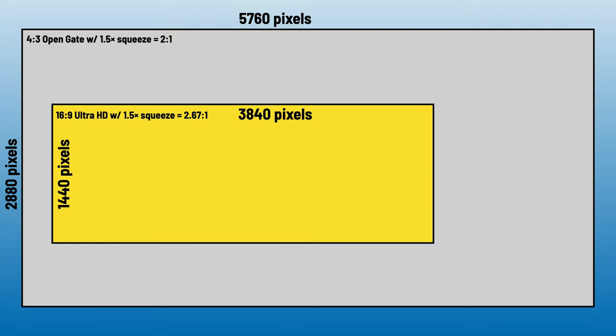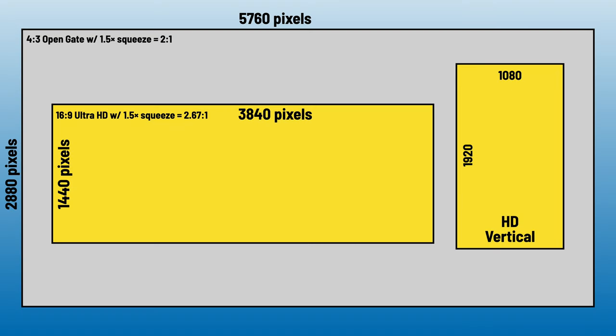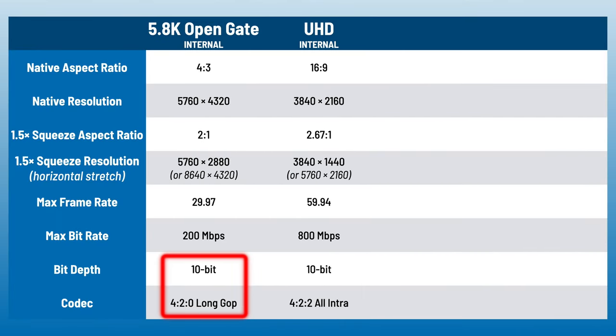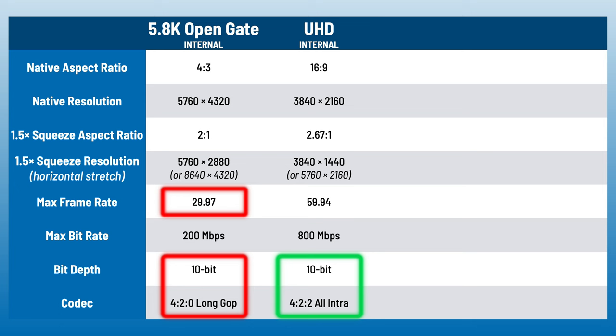Comparing squeezed 4:3 OpenGate to squeezed 16:9, OpenGate has a clear advantage as you have a lot more pixels to work with, can reframe all day long, and can even cut a vertical crop out of the footage at a full 1080x1920 resolution. But there must be a trade-off, right? Well, there is. OpenGate 4:3 internal recording is 10-bit 4:2:0 LongGOP up to 30p, while 16:9 Ultra HD is 10-bit 4:2:2 All-Intra and can go up to 60p. So you definitely have extra color information and higher frame rate options in the 16:9 clip.